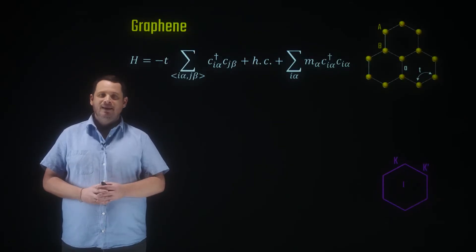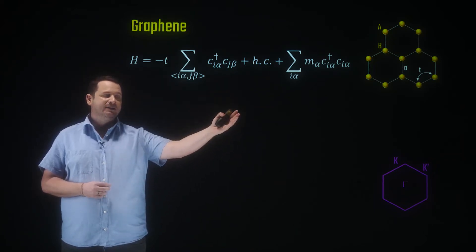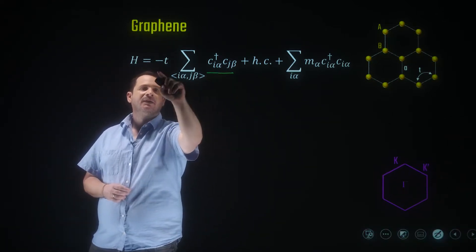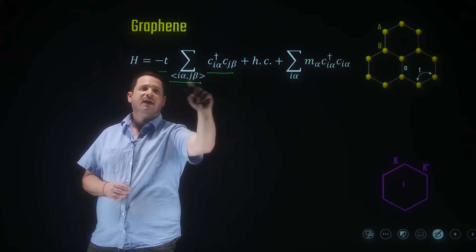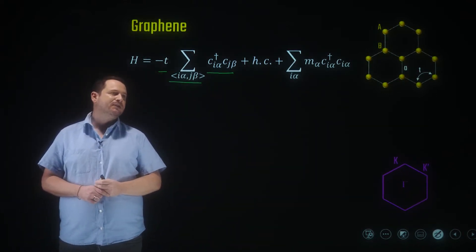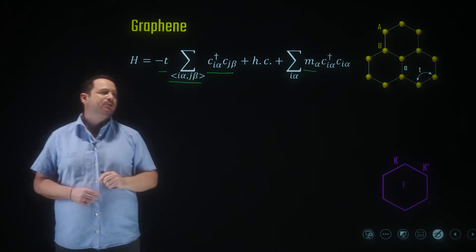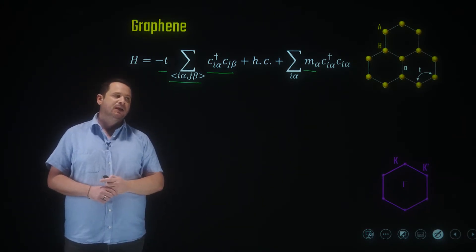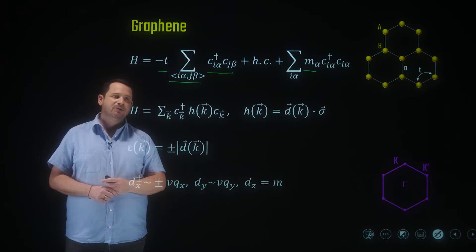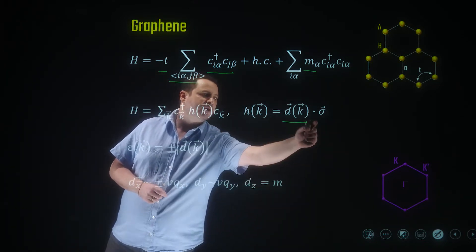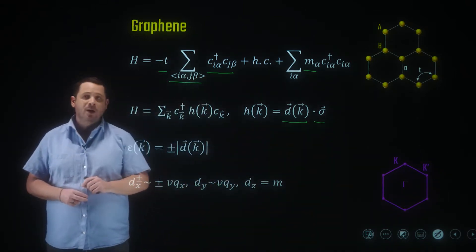First, we're going to recap the essential physics of graphene. We consider an electron on a hexagonal lattice. We have the nearest neighbor hopping term, where these brackets denote nearest neighbor coupling, and we have a possible on-site energy or mass term that we will consider later. We can Fourier transform this Hamiltonian into momentum space, which then takes a very compact form: a momentum-dependent D-vector dot a sigma vector of Pauli matrices.